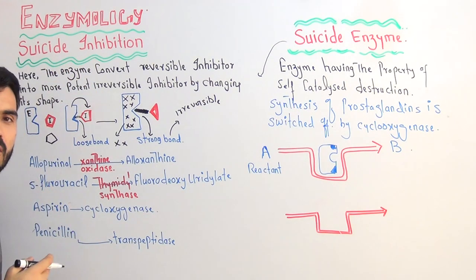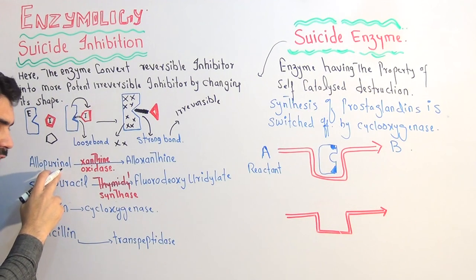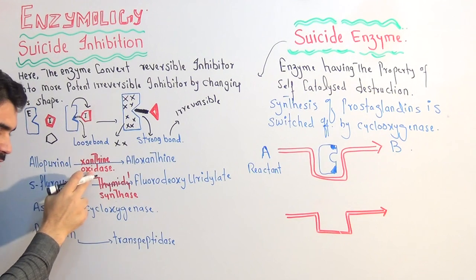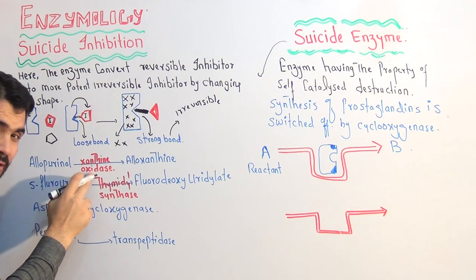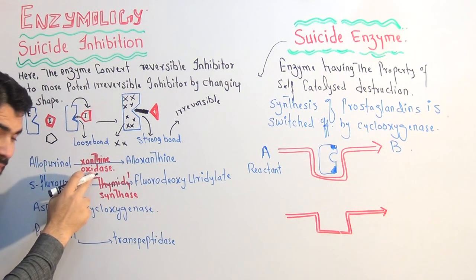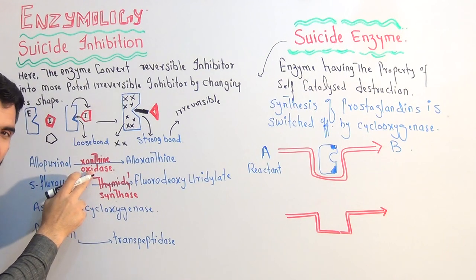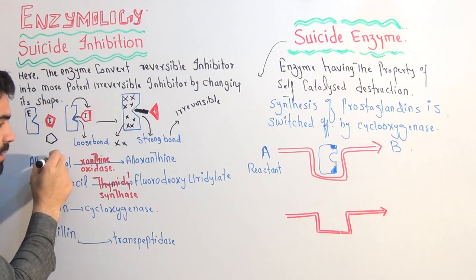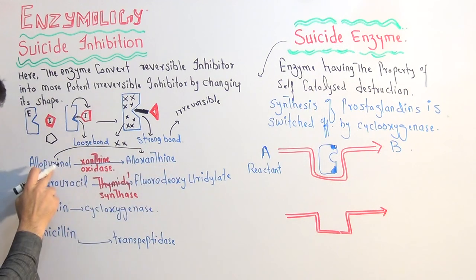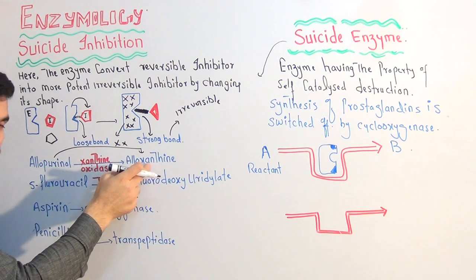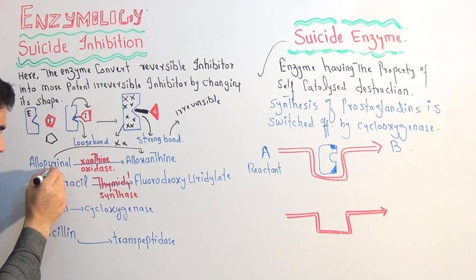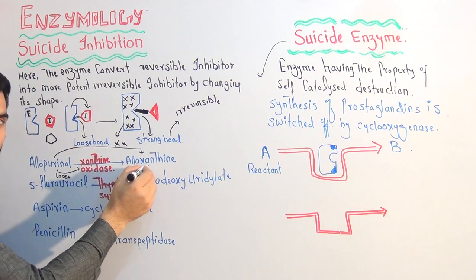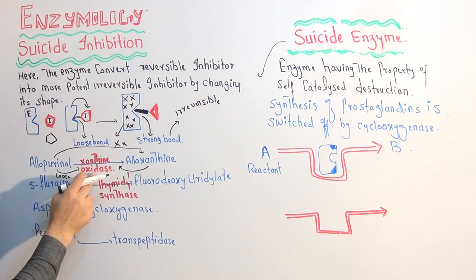The very first example is allopurinol. When allopurinol attaches with xanthine oxidase — which is an enzyme — it is an inhibitor for this enzyme. It first makes a loose bond with xanthine oxidase, and after some time the enzyme changes the shape of that structure, converting it into alloxanthine. The initial structure makes a loose bond, but the later structure — alloxanthine — makes a strong bond. That is why this is a very good example of suicide inhibition.